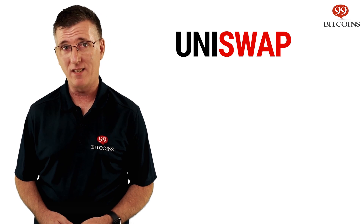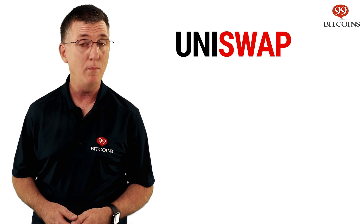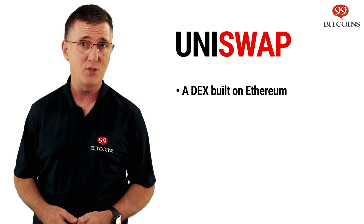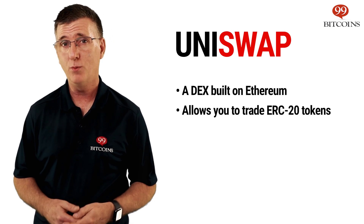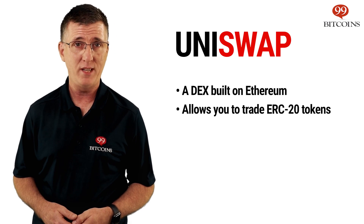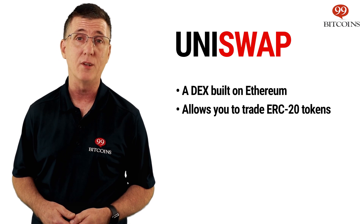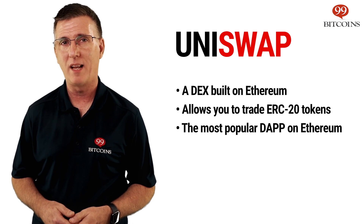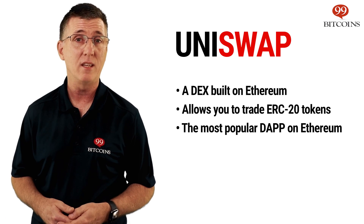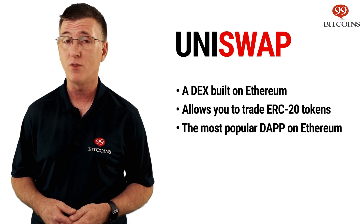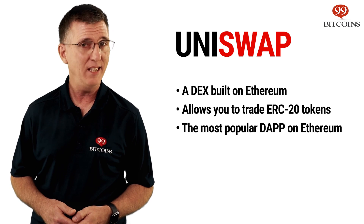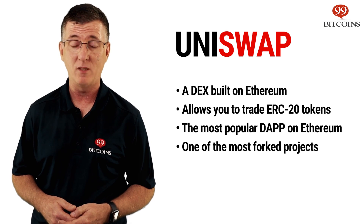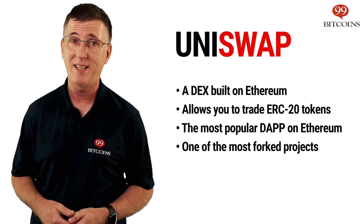Now that we've covered DEXs, we can focus on Uniswap more in-depth. Uniswap is a DEX built on top of the Ethereum network infrastructure. It's a set of automated rules used for trading ERC20 tokens, which is a term given to a certain standard of Ethereum tokens. Uniswap is the most popular decentralized application, or DApp, on the Ethereum platform, with hundreds of thousands of users trading on it each week. Additionally, Uniswap is one of the most forked projects in the DeFi space, meaning people use its code to build additional applications.